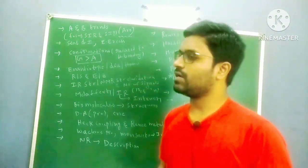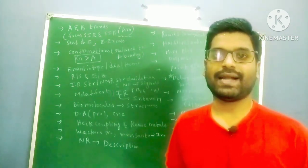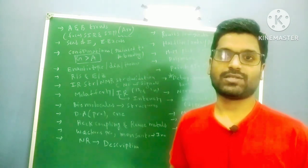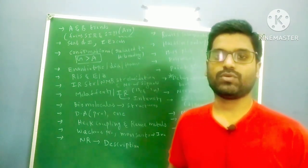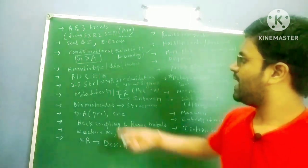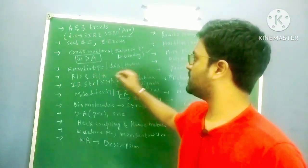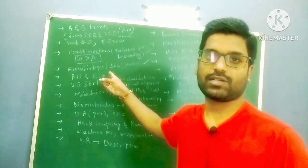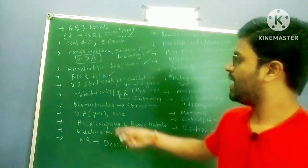Next, conformations — mainly focus on hydrogen bonding conformations. Normally anti is more stable, but if you have hydrogen bonding then gauche is more stable than anti. Do questions on this confirmation topic. Next, enantiotopic, diastereotopic, and homotopic protons in stereochemistry — these are very important. Read the rules for these and do questions on them.